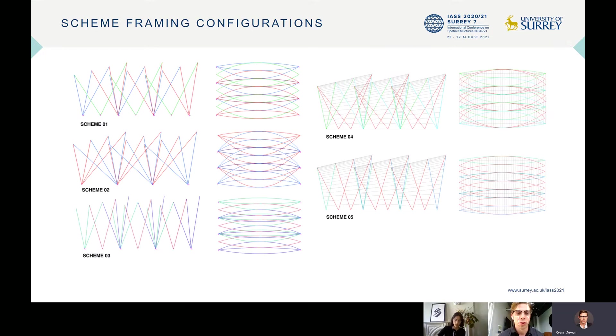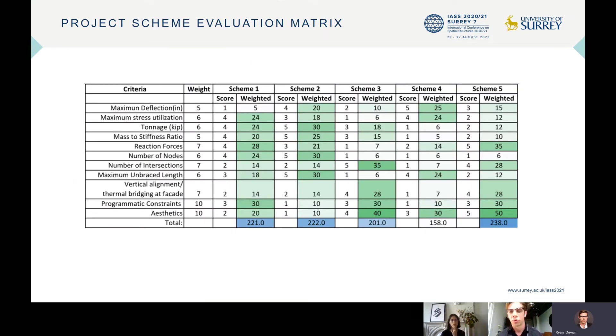So, from the lenticular form, we diverged this into five potential schemes that varied in configurations, which considered architectural desires, constructability constraints, and potential structural optimization. And we took these schemes, and once the schemes were schematically vetted, a weighted evaluation matrix was created to evaluate the schemes, both from a functional and qualitative series of criteria.